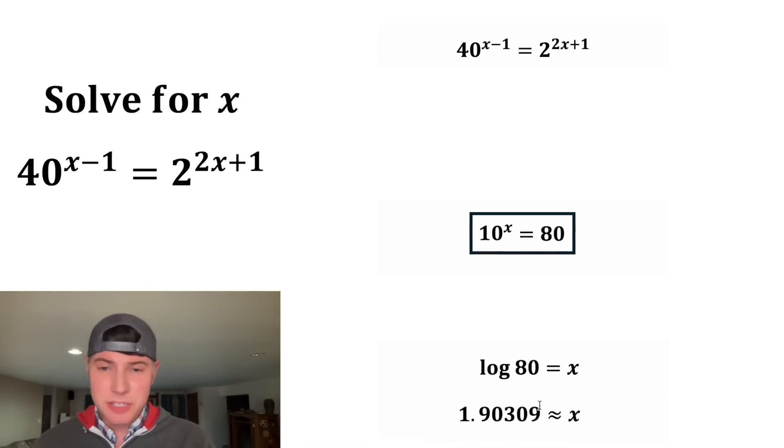And for the fun of it, we can check. If we take this decimal and plug it into the exponent, 10 to this is this right here. And the only reason it's not exactly 80 is because we truncated it right here. If we were to let these decimals go forever, it would end up being exactly 80. So what we got for x checks out with this right here.